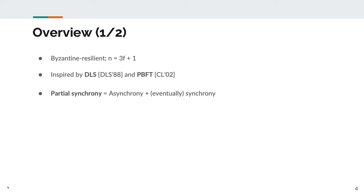During the asynchronous period, messages can arbitrarily be delayed, whereas during synchrony there exists an upper bound on message delays. Importantly, Tendermint uses gossip as a communication primitive. Usually algorithms assume pairwise links, as PBFT and HotStuff do. However, Tendermint builds on top of a gossip network. Gossip allows processes to disseminate information indirectly — if a correct process receives a message M, it is guaranteed that every correct process will eventually receive M. Gossip ensures that the logic of the Tendermint algorithm is simple and concise. An execution of Tendermint proceeds in rounds.